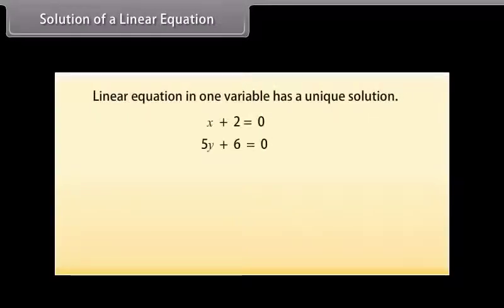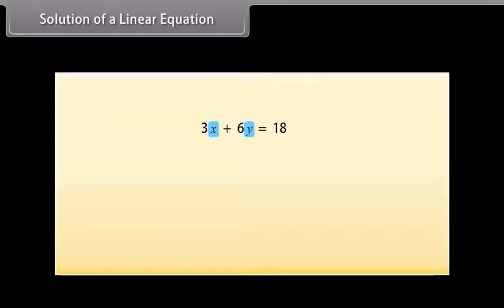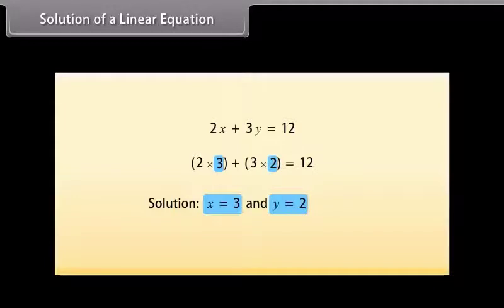We know that every linear equation in one variable has a unique solution. But how many solutions do linear equations in two variables have? As there are two variables in the equation, its solution means a pair of values — one for X and one for Y — which satisfy the given equation. Let us take the equation 2X plus 3Y is equal to 12. Here, X is equal to 3 and Y is equal to 2 is a solution because when you substitute X as 3 and Y as 2 in the equation, you find that the answer becomes 12.